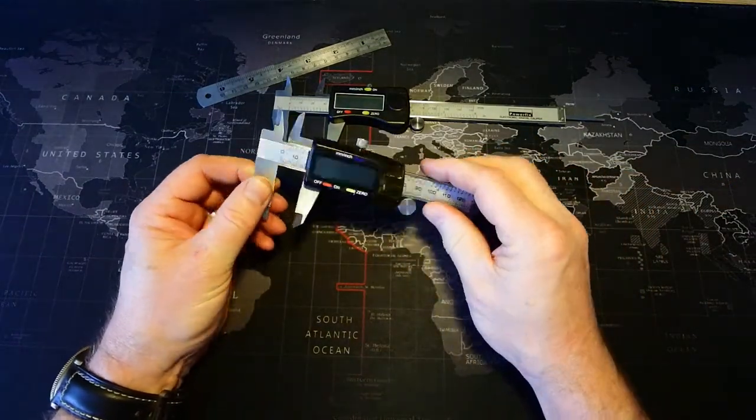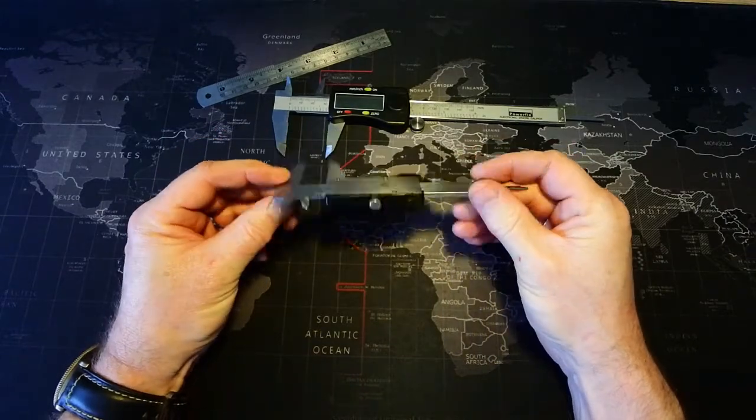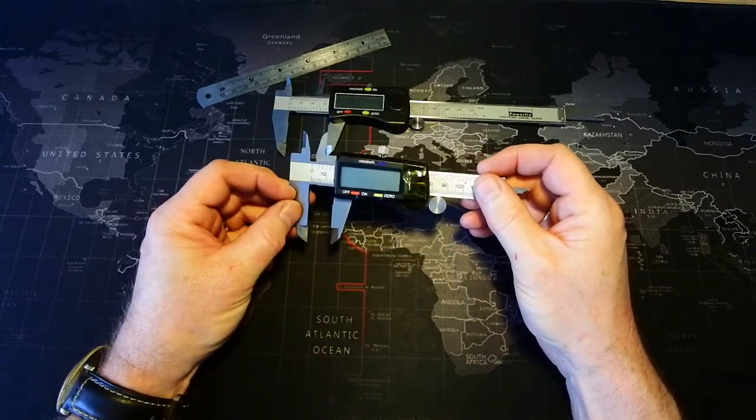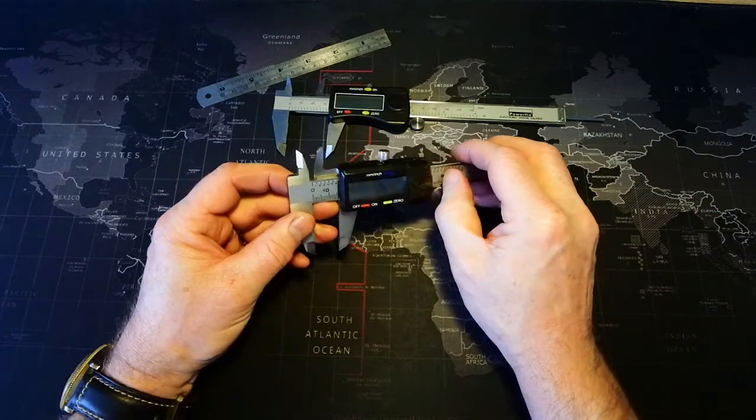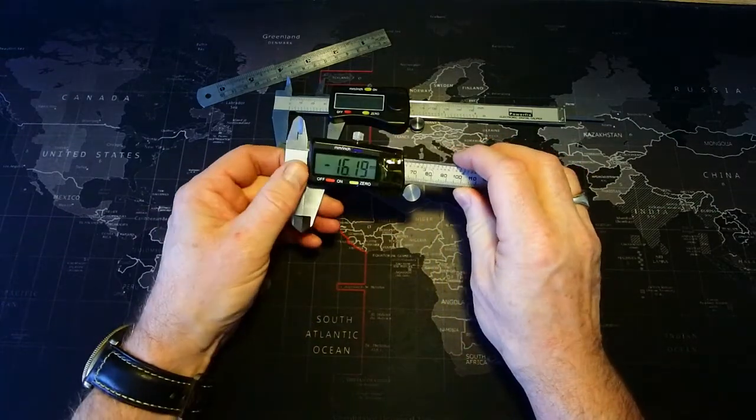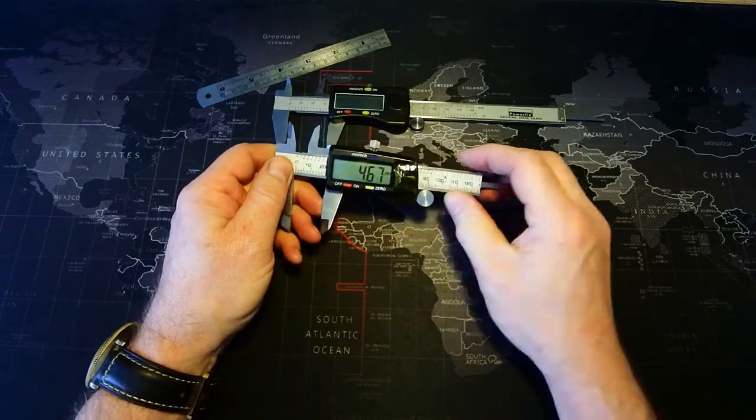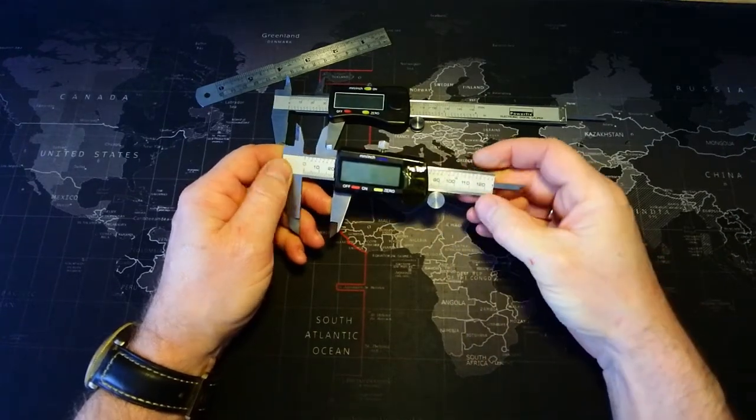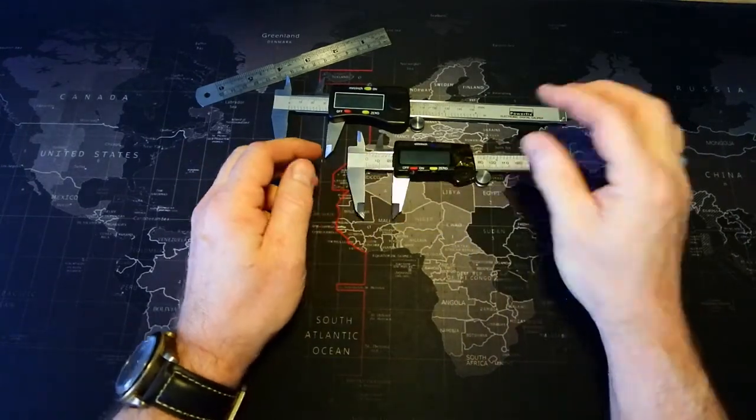But those calipers are so cheap and so useful that you can have as many pairs as you like, keep them all over the place. This is a pair I've cut down and modified to isolate the battery so it doesn't go flat. It's pocket size, take it to the store when you're buying hardware.